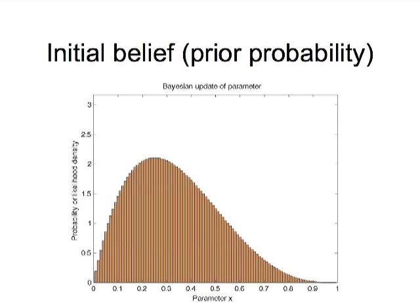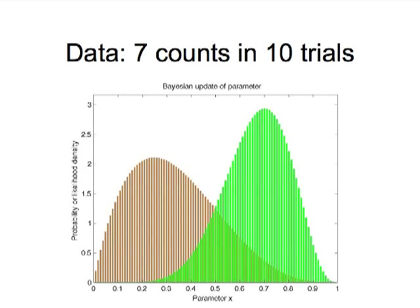We'll start with the same prior — a weak initial belief that the coin has a probability of one-third of coming up heads. But now we flip the coin ten times and observe seven heads. The likelihood, shown in green, is now gravitating more to the right, centered somewhat around 70%. It's still diffuse, but that likelihood now has more power to overcome the weak prior.